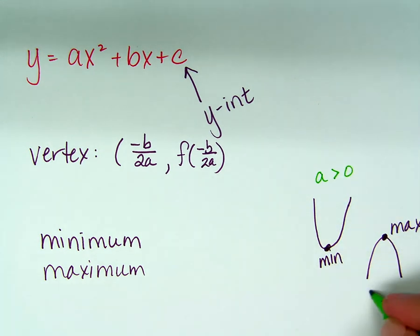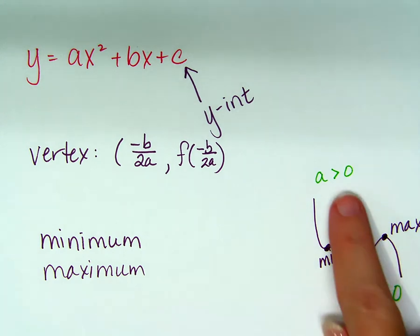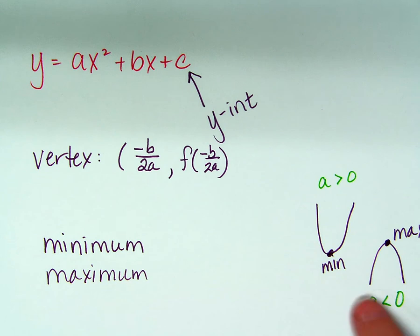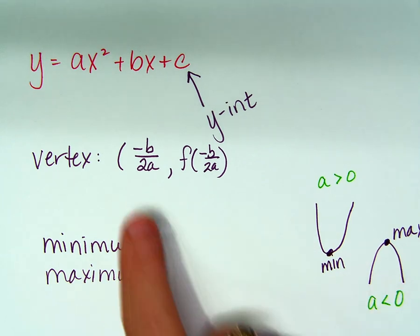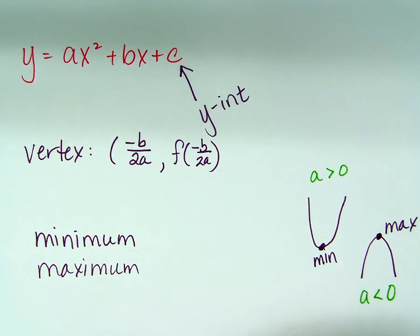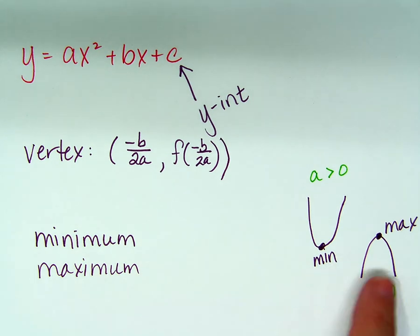If A is greater than 0, it's going to be a minimum. And if A is less than 0, it's going to be a maximum. When A is greater than 0, the parabola is opening up. When A is less than 0, the parabola is opening down. So when you find this -b/2a and then the value of the function, that gives you a point of your vertex. Deciding whether it's a minimum or maximum depends on the sign of A, either positive or negative.